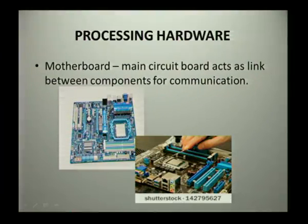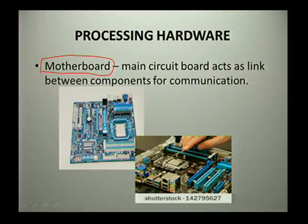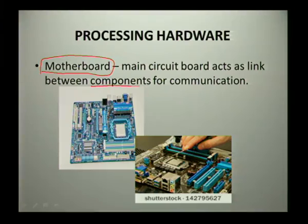Our processing hardware has a few components. The first main hardware you need to know about is the motherboard. A motherboard is a very important part of a computer because it acts as a housing unit for all other components. It is defined as a main circuit board that acts as a link between components for communication. All other devices — like your RAM, your CPU, your mouse, and your keyboard — are linked into this one device.